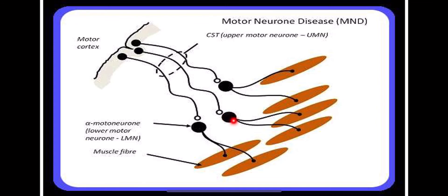Primary lateral sclerosis is a disease affecting the anterior horn cells in the center of the body. The anterior horn is involved in primary lateral sclerosis, which is a motor neurone disease. Pure motor neurone disease and pure lower motor neurone disease are also important categories to know about.